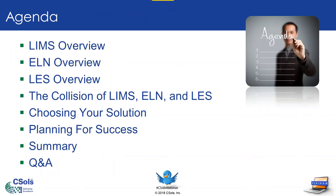To make sure we are all on the same page, today's agenda will include an overview of LIMS — where we'll talk about what these systems do, what they're used for, and the marketplace. We'll do the same for electronic lab notebooks, or ELNs, and for laboratory execution systems. Then we'll talk about the confluence of LIMS, ELNs, and LES, and how they're blending together. We'll also give you information on how to choose your solution — and I say solution, not system, because it could be multiple systems that make up your solution. We'll talk about how you plan for success, summarize, and leave time at the end for questions and answers.